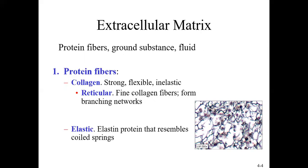The extracellular matrix is really a combination of three main things: protein fibers, something called ground substance, and some associated fluid. Depending on the tissue type, you may have a lot or very little — connective tissue has a lot of extracellular matrix around its cells, while epithelial tissue has very little. Protein fibers come in two main types: collagen fibers and elastic fibers.